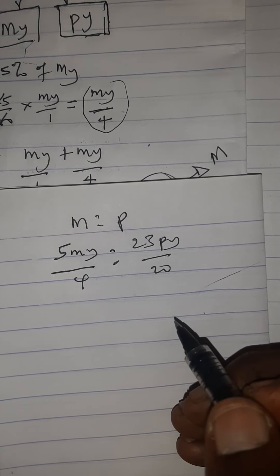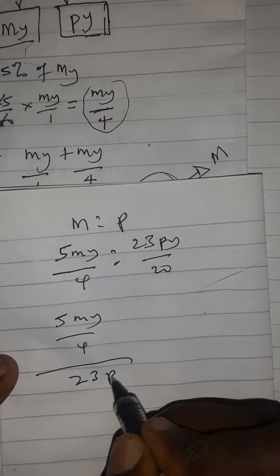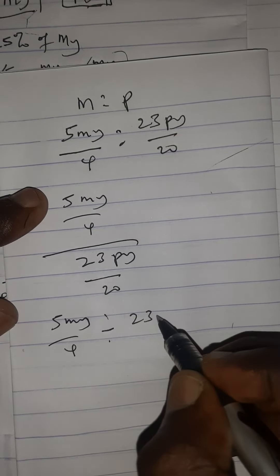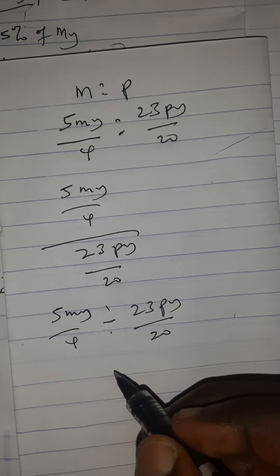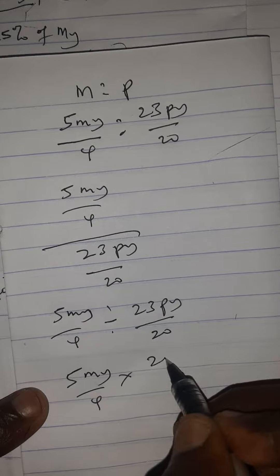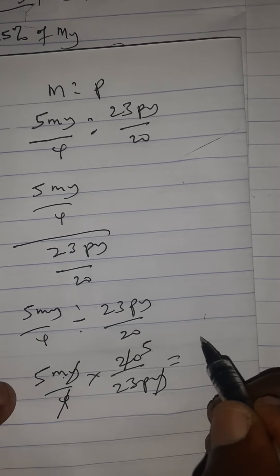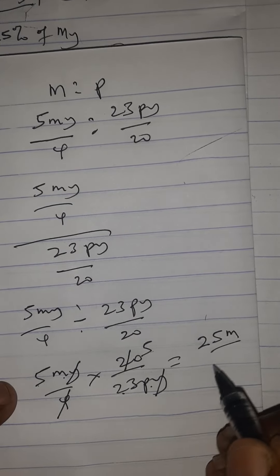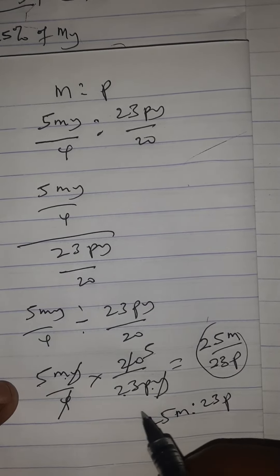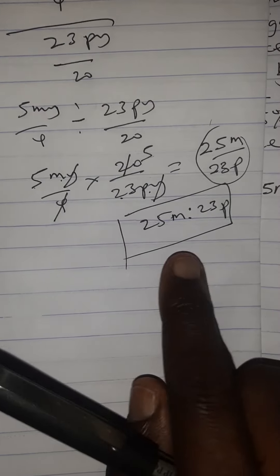To simplify: divide 5my/4 by 23py/20, which gives 5my/4 × 20/23py. The y cancels, and 20/4 = 5, so we get 5m × 5 = 25m over 23p. The new ratio is 25m to 23p, making the correct answer option A.